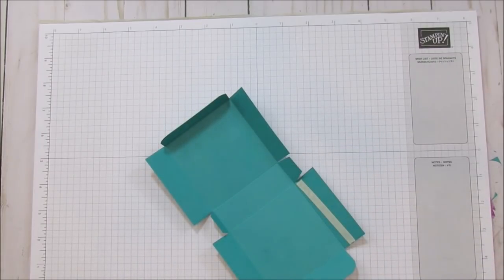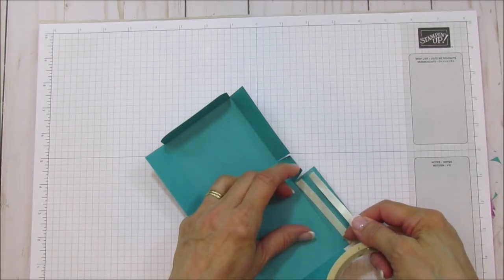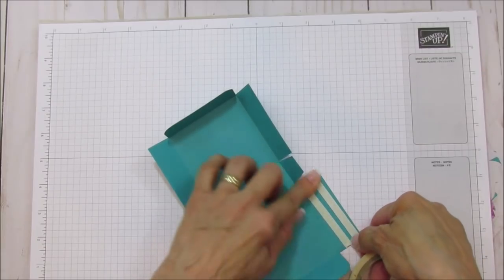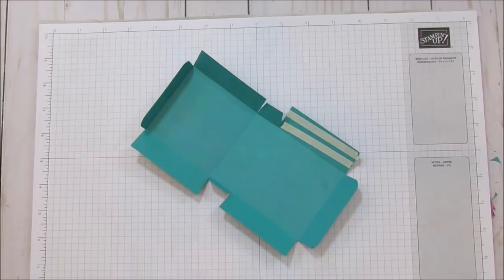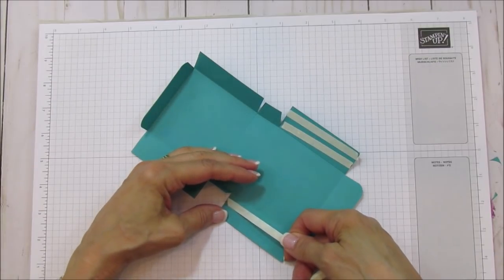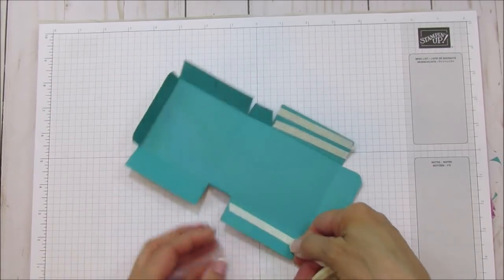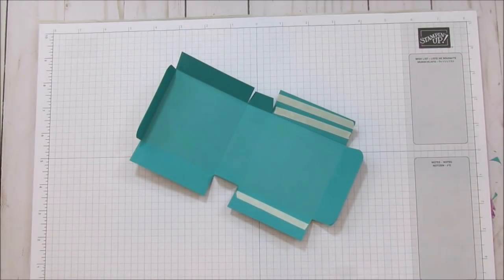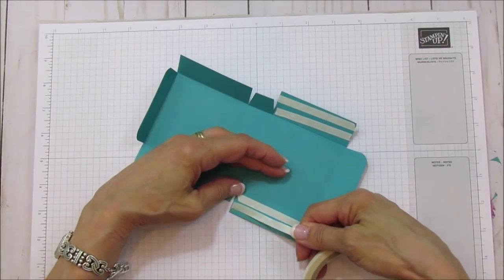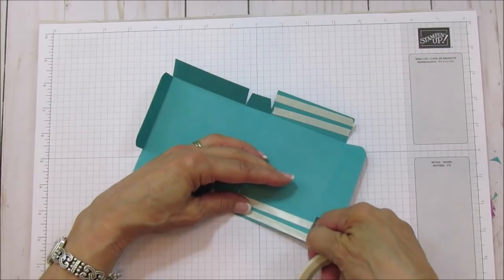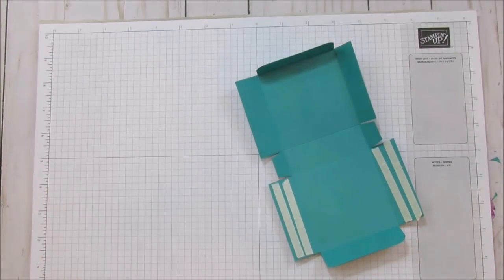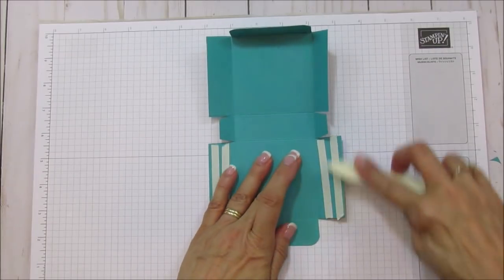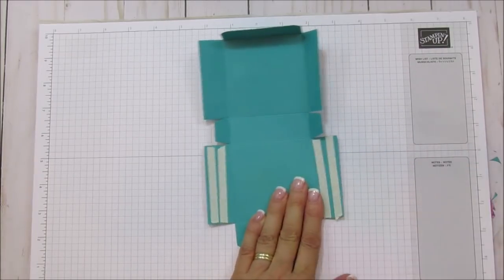If you make a lot of these ahead of time, you want these boxes to stay together. You don't want to be going back and having to reattach. It's important that you use a strong adhesive because if you use snail, they're going to fall apart. This tear and tape is great for that. It's really strong. I'm using two pieces on each one.